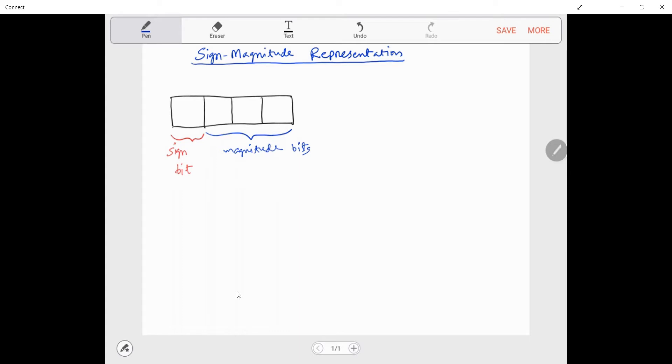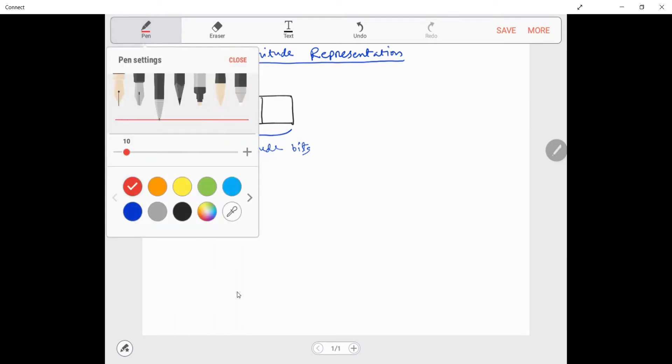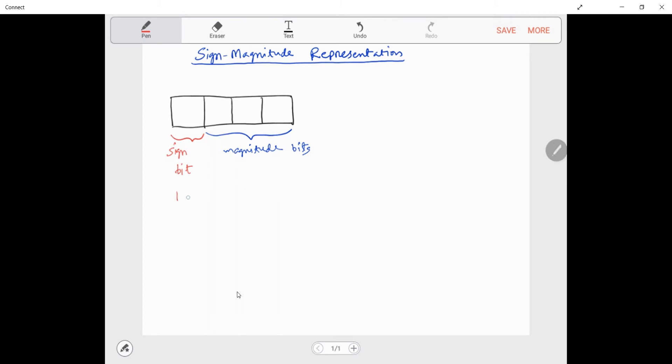For the sign bit, one is used for negative, and zero is used for positive.